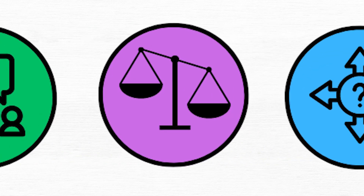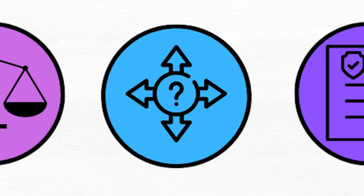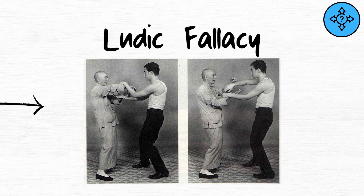Incomplete comparison. The incomplete comparison fallacy uses a misleading argument. Ludic fallacy. The ludic fallacy mistakes uncertainty in games for uncertainty in real life.